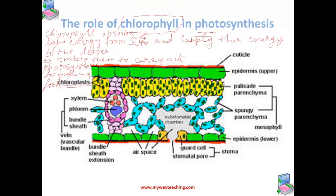We can sum up by saying that the role of chlorophyll is that it absorbs light energy from the sun and supplies this energy to the leaves to enable them to carry out photosynthesis for making food.